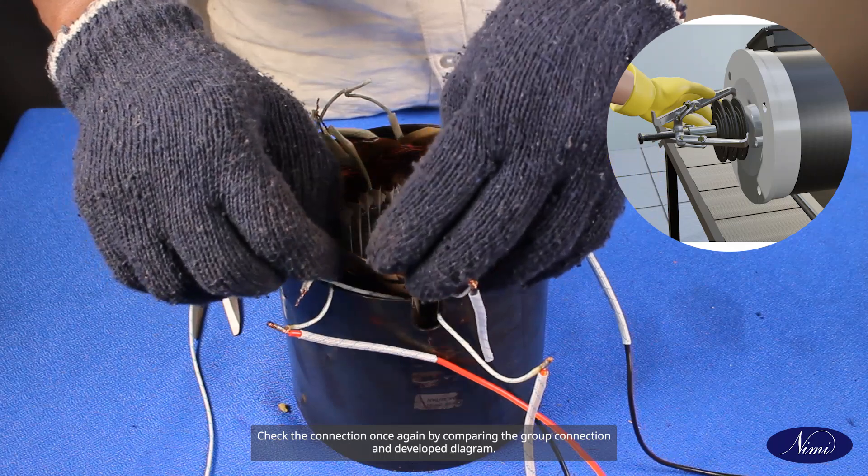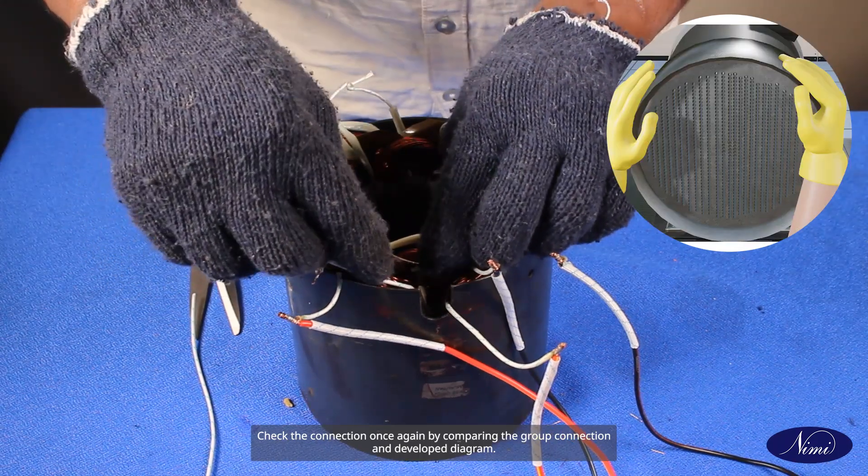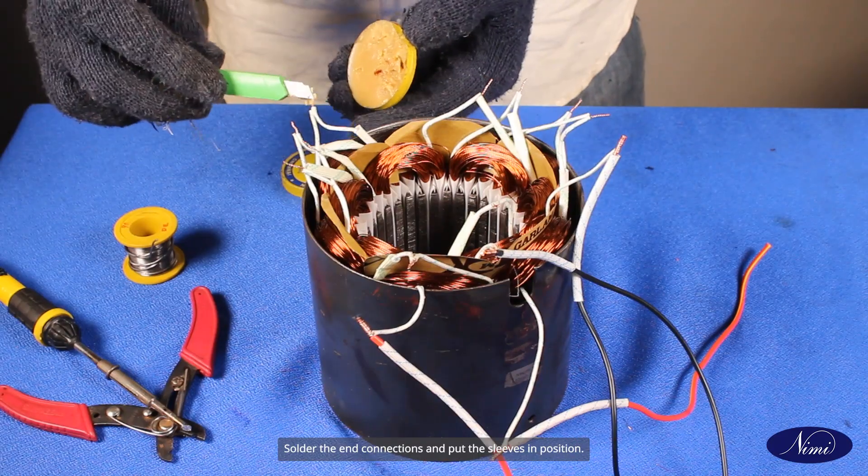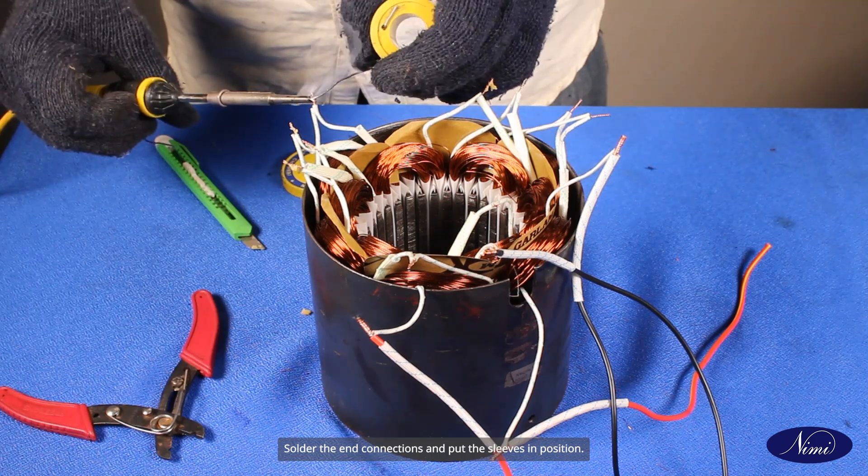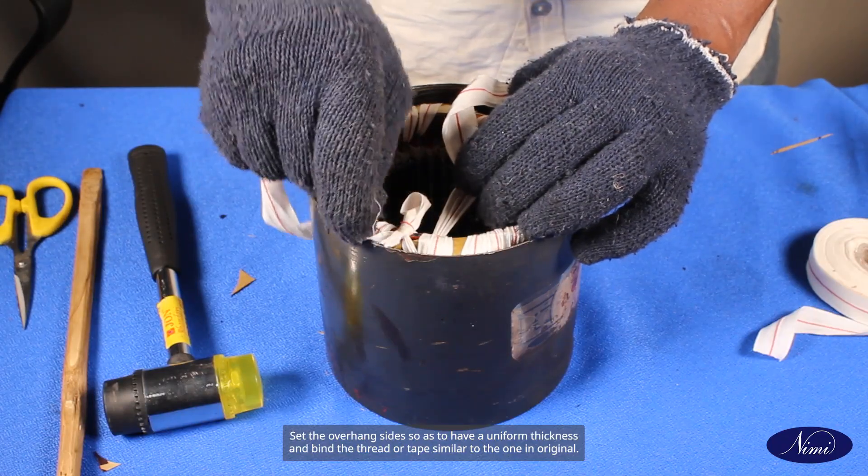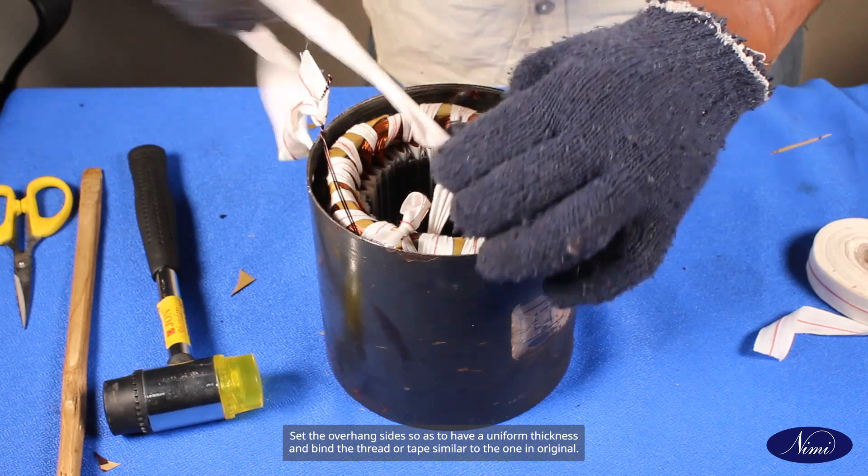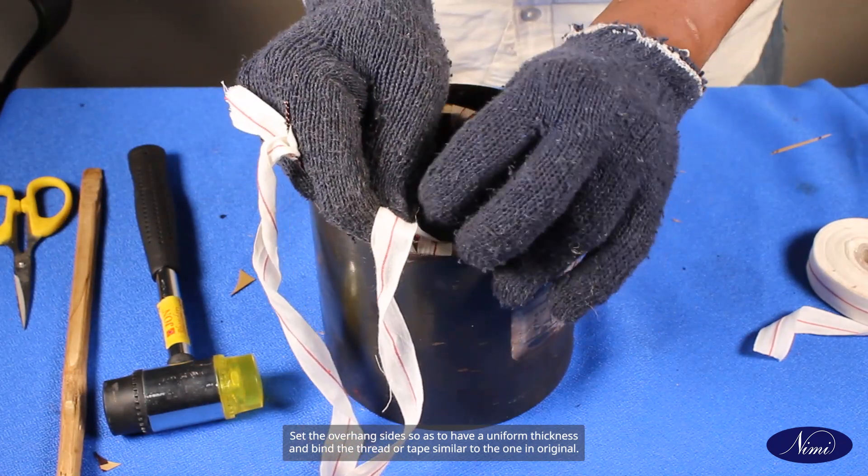Solder the end connection and put the sleeves in position. Set the overhang sides so as to have a uniform thickness and bind the thread or tape similar to the one in original.